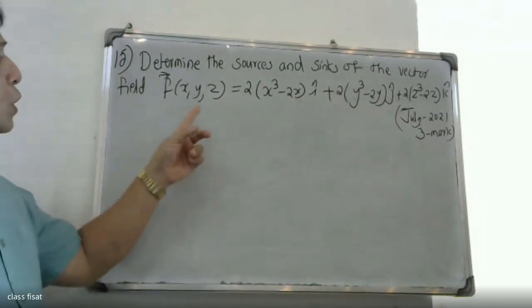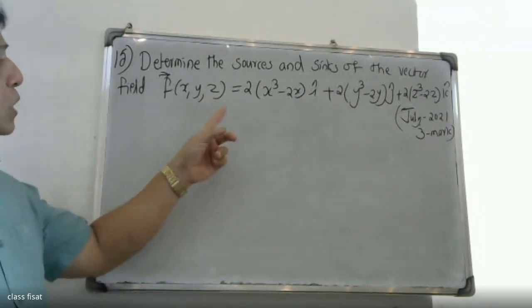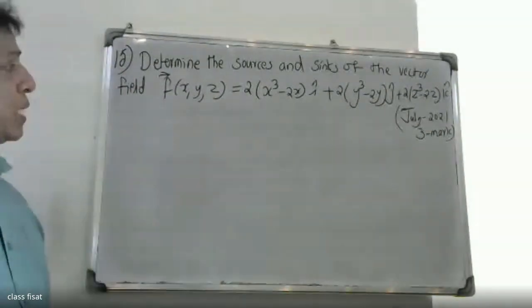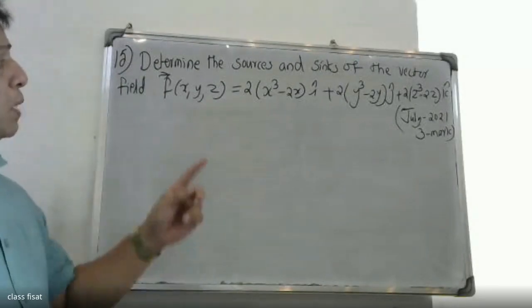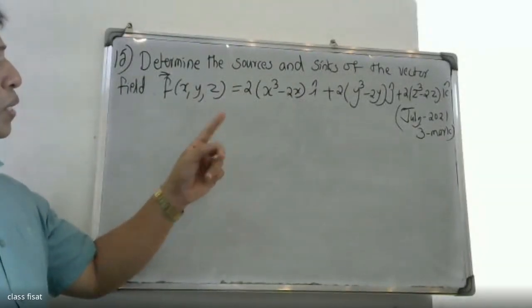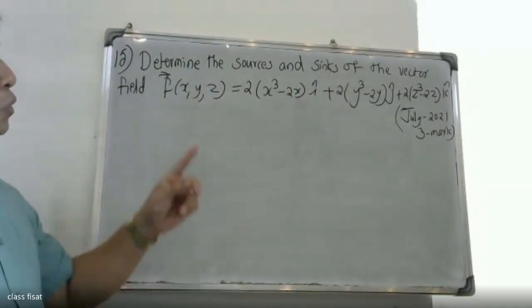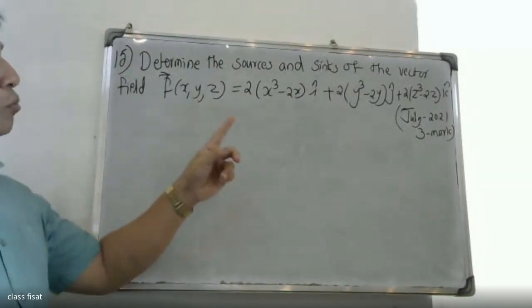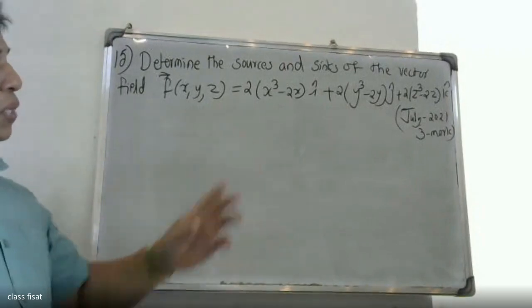F of x, y, z equals 2x cubed minus 2x into i, plus 2y cubed minus 2y into j, plus 2z cubed minus 2z into k.